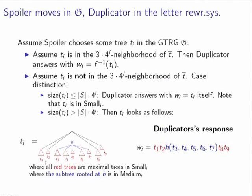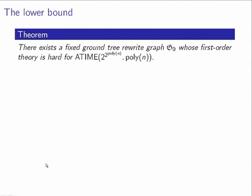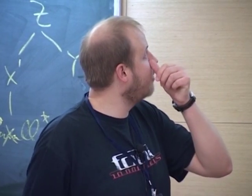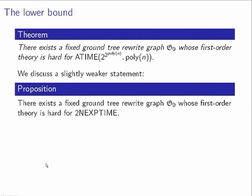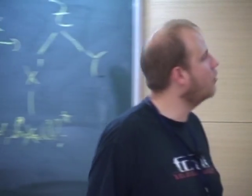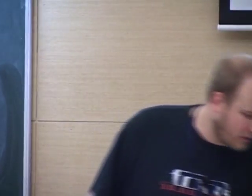The lower bound is that there is already a fixed ground tree rewrite graph whose first-order theory is hard for the complexity class ATIME(2^poly(n)) under log-space reductions. Instead of proving full hardness for this class, let me sketch the proof for the 2-NEXPTIME lower bound. Assume some fixed tiling problem such that deciding whether a given initial coloring can be extended to a 2^n × 2^n tiling is 2-NEXPTIME hard.